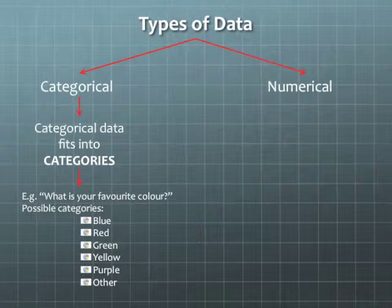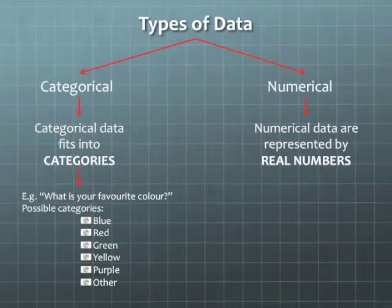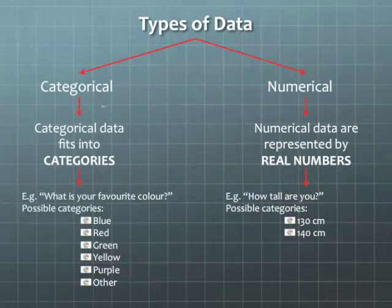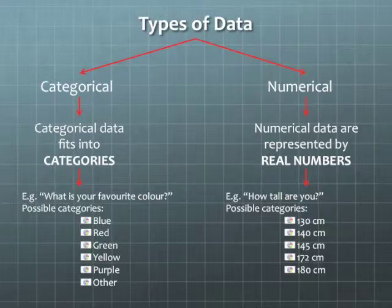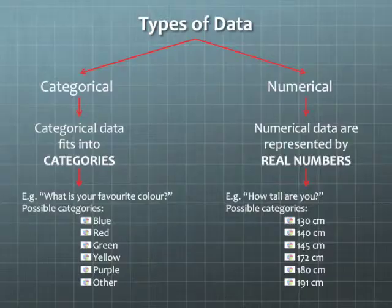Compare this to numerical data. As you might be able to imagine, numerical data is any data represented by real numbers. So again, if we had a survey question — this time the question is, how tall are you? — possible responses could be 130 cm, 140 cm, 145 cm, 172 cm, 180 cm, or 191 cm. These are not the only answers to that question, but they certainly are real numbers that could be answers to the question, how tall are you? In the next two slides, we're going to take a closer look at categorical and numerical data.